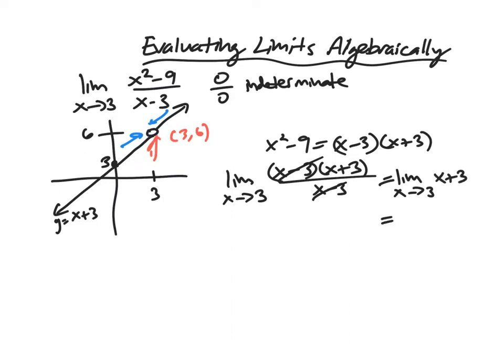And so it's just equal to the limit as x approaches 3 of x plus 3. This is a polynomial. We know we can just plug into polynomials, and so we just get 3 plus 3, which is 6.